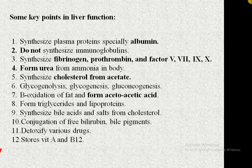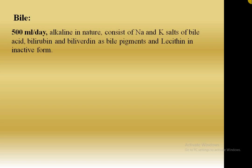Bile is secreted in the bile canaliculi in the liver at a rate of 500 ml per day. You can calculate per-hour secretion from this figure. Bile is alkaline in nature and consists of sodium and potassium salts of bile acids, bilirubin and biliverdin as bile pigments, and lecithin in inactive form. If lecithin gets activated as lysolecithin, it is a cell membrane destroyer.